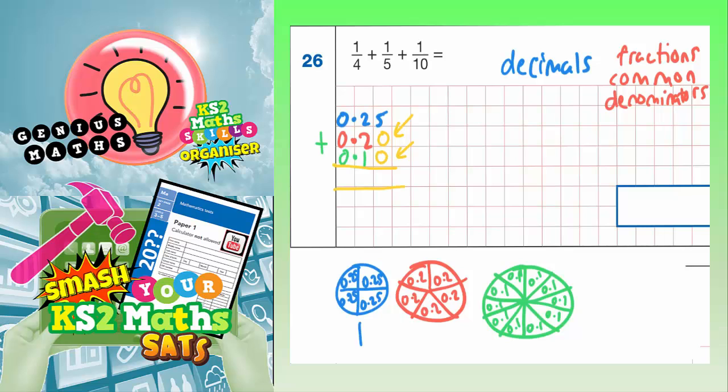So 5 add nothing add nothing is 5. 2 add 2 add 1 is 5. 0 add 0 add 0 is 0. Put your decimal point in, 0.55. So one possible answer would be 0.55.